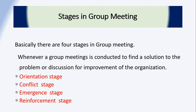There are four stages in a group meeting. Whenever a group meeting is conducted to find a solution to a problem or discussion for improvement of the organization, there are four stages: the orientation stage, conflict stage, emergence stage, and reinforcement stage. Let's talk about these four stages in further detail.